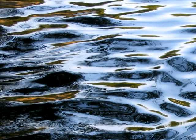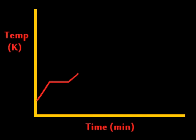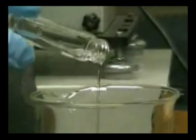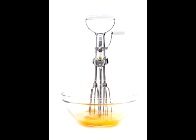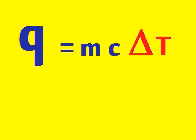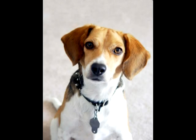Once all the solid's melted and liquid's all you got, the temperature will rise once more until it gets real hot. The molecules of liquid move faster with more heat; the liquid gets less viscous and easier to beat. To make the temperature rise, use mc delta T once more — and now here's the reprise: mc delta T, that's calorimetry!